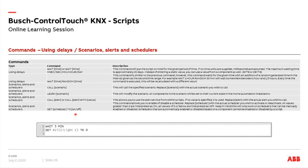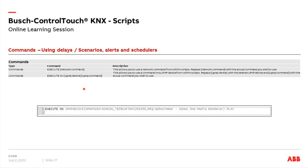We also have some execute commands. The first activates a network command — for example, if you have an IP camera that listens for network commands to take a snapshot. And one for UPnP devices — for example, controlling a Sonos device. Of course for Sonos the API is integrated, so scripts aren't strictly needed. But for UPnP audio devices from other manufacturers where no API is integrated, you can use these script commands.